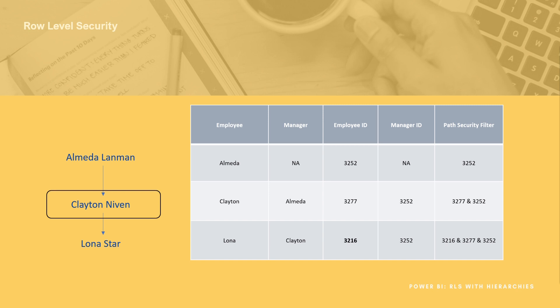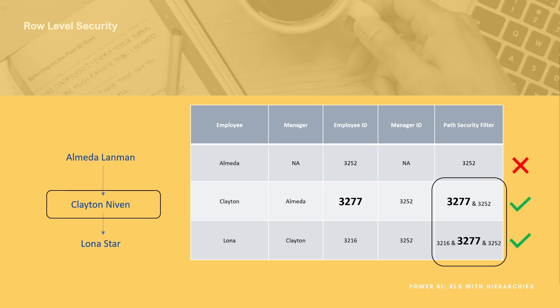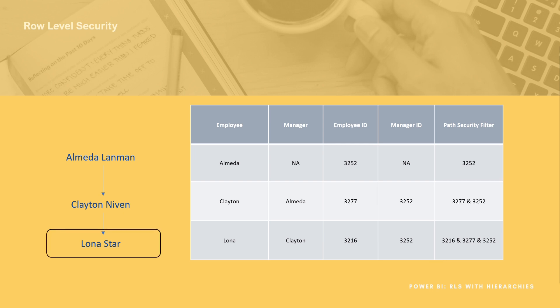When we select Clayton we're selecting employee ID 3277. 3277 only appears on two rows: Clayton's own row and Lona's. It does not appear in Almeda's, because Clayton reports into Almeda and therefore should not have access to see her data. Finally when we get down to Lona, Lona's ID will only appear on her own row — therefore Lona can only see her own numbers.